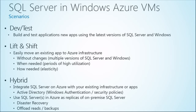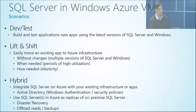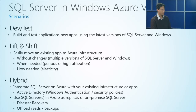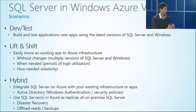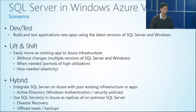Some customers have periods when they need more processing power or larger amounts of memory, and during those periods they can move to Windows Azure. This is an elastic offering — you can start with a small machine and once you go to production, move into a large or extra-large machine. It's very easy to change in the portal.